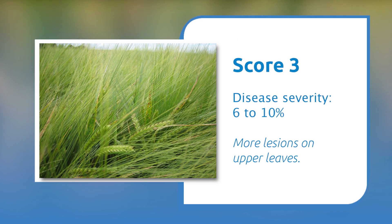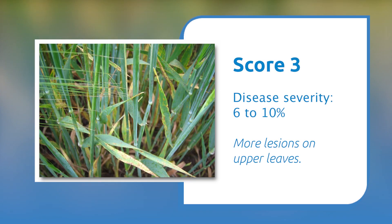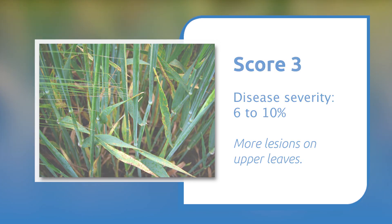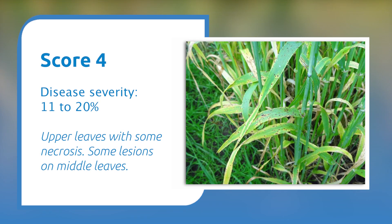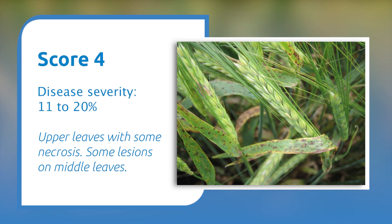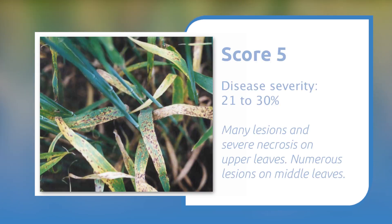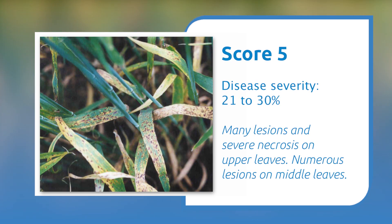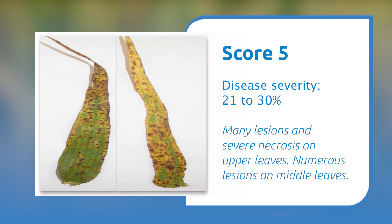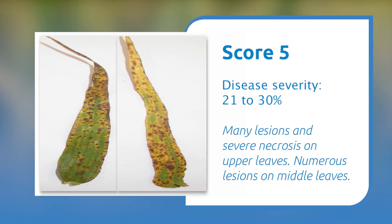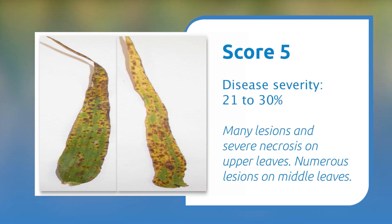At score number three we start to see more lesions on the upper leaves — approximately six to ten percent. Score number four sees numerous lesions and some necrosis for the first time, equating to approximately 11 to 20 percent infection. Number five shows many lesions on the upper leaves with definite necrosis, approximately 21 to 30 percent on a percentage scale.